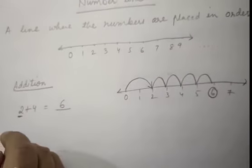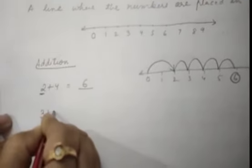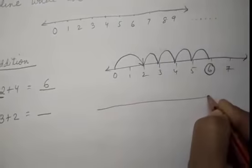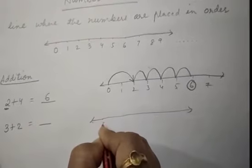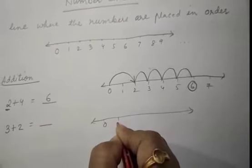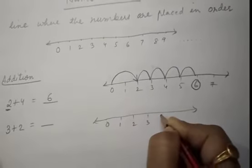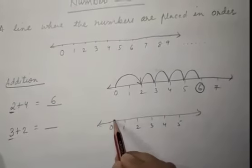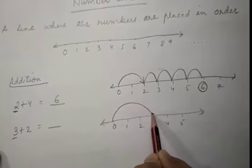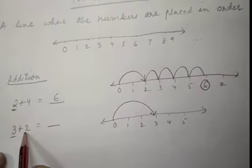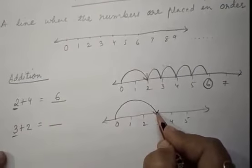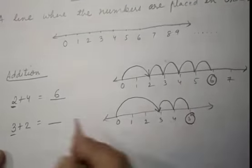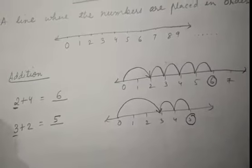Okay. Let me see another one. 3 plus 2 equal to dash. Again draw a number line. Then you write the numbers. Always write the numbers from 0, 1, 2, 3, 4, 5. So here what is the number? First number? That is 3. Then what is the next number? 2. How many times do you have to go? 1, 2. So what number we got? We got the 5. So did you understand?